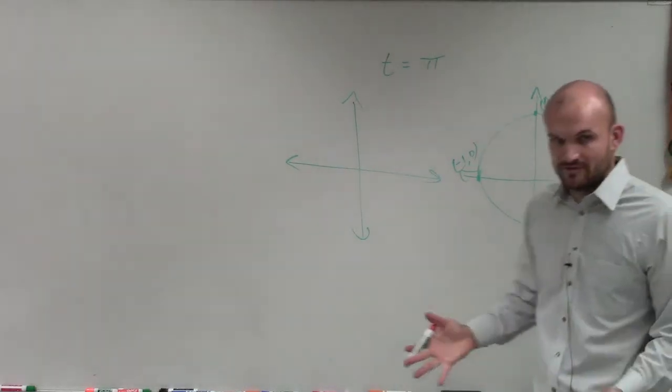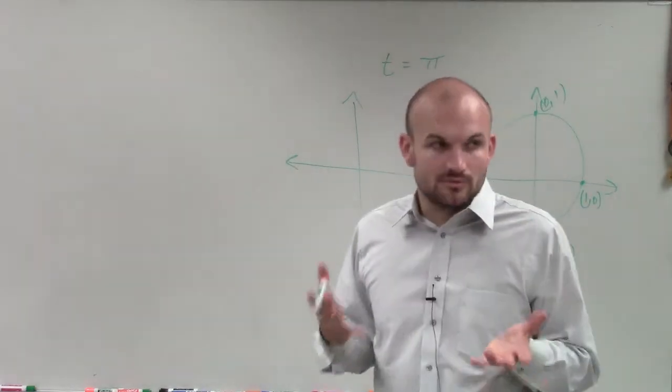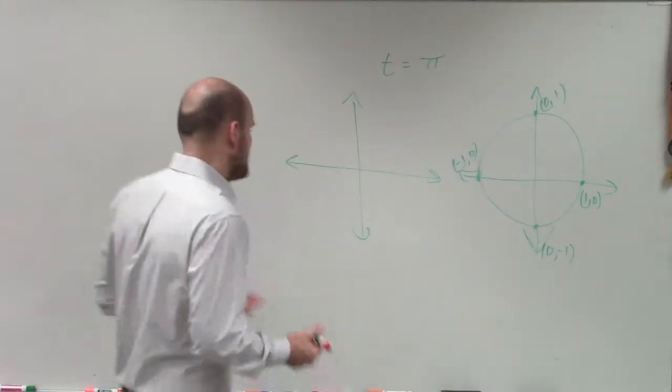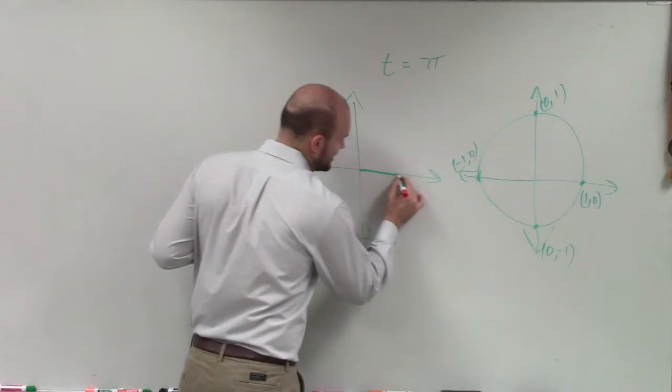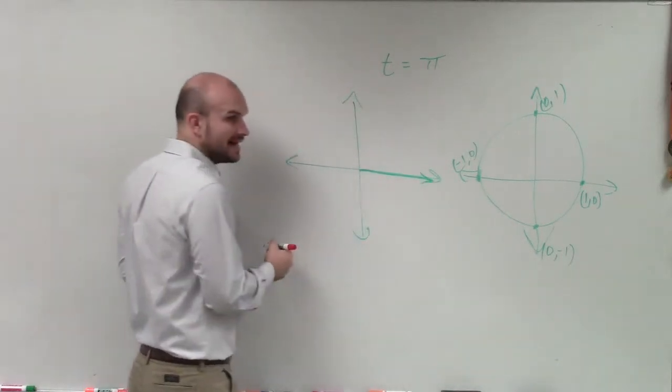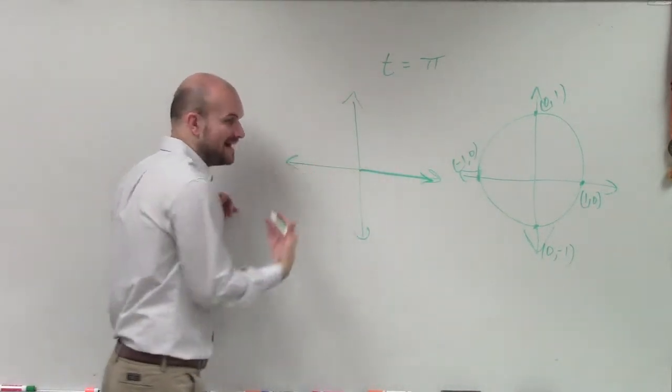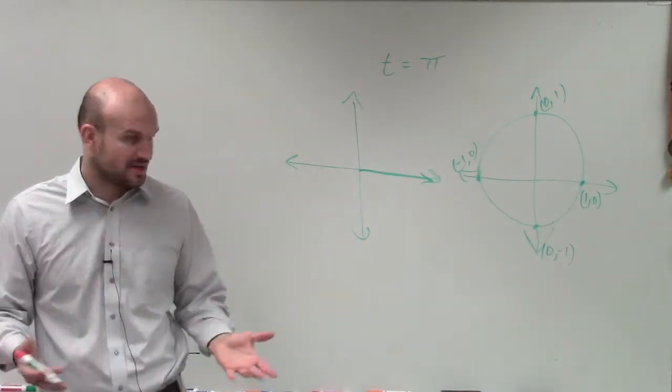Now remember, when graphing an angle, if I say our angle t is equal to pi, we need to make sure that we always start on our initial side, and then we rotate a ray to get to our final side, or what we call our terminal side.